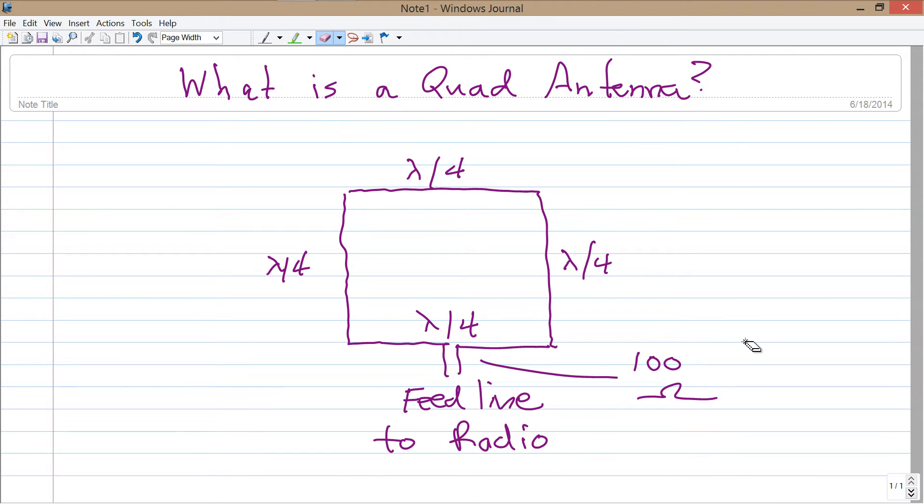So, that is the basic anatomy of a full wavelength loop and that is the starting point for an antenna known as a quad. Now, I also made a video a couple of days ago regarding parasitic elements for antenna systems and the Yagi antenna in particular. A parasitic element is just an antenna element that forms part of an antenna but is not connected to the feed line.